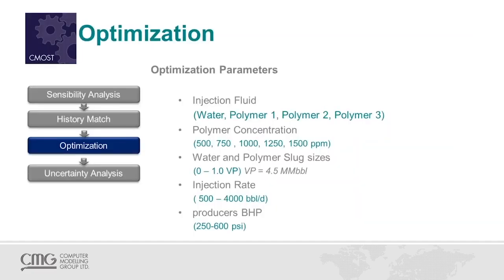Optimization means creating a matrix of parameters and varying all those numbers. The first parameter is what kind of fluid to inject: water, polymer 1, 2, or 3. We also vary polymer concentration from 500 to 1,500 ppm, slug volume from 0 to 1 pore volume, injection rate from 500 to 4,000 barrels per day, and bottom hole pressure from 250 to 600 psi. All those combinations create a matrix that CMOST will use to find the best solution.